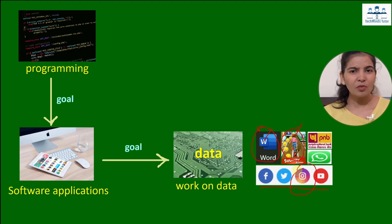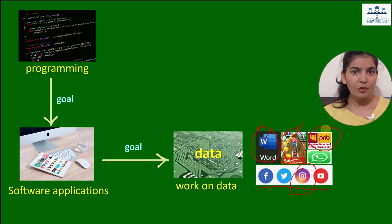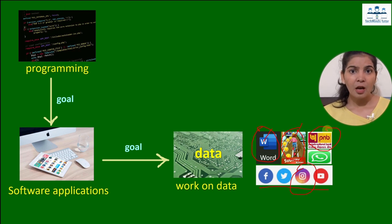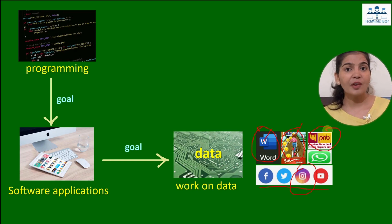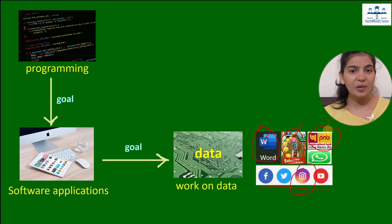If we talk about Instagram, we upload posts, give comments, and like posts — all of these are data. How many people you are following, how many are following you — this is also data. In a banking app, account balance, user ID, password, credited amount, debited amount, transferred amount — all of these are data when creating a banking application.